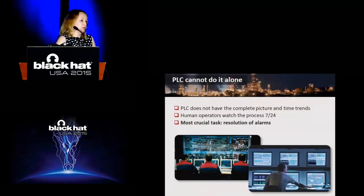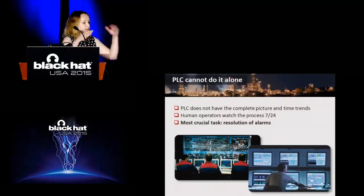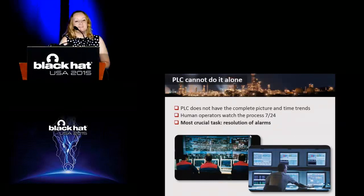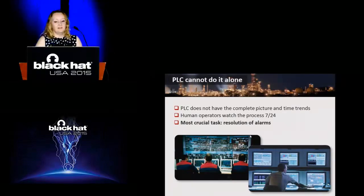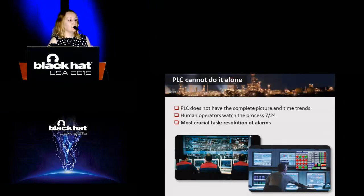Even the PLC is not enough to control complex processes. PLCs do not have the complete picture of the plant and they don't have time trends. Therefore the process is additionally supervised by human operators which monitor the process around the clock. As Jason Larsen told once, the plant is typically started in a state of imminent failure and remains that way. So the job of the operator is not to watch the process but to resolve alarms which always flash. Things in the plant go wrong all the time. He has a very nervous job.